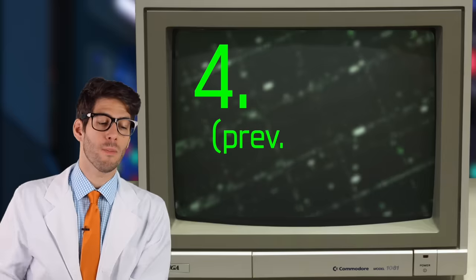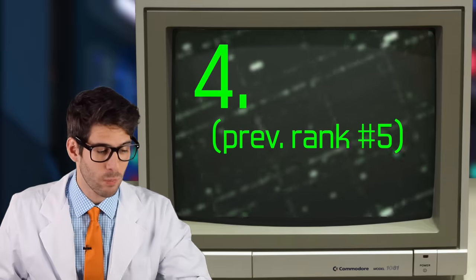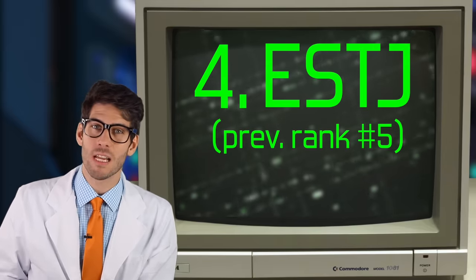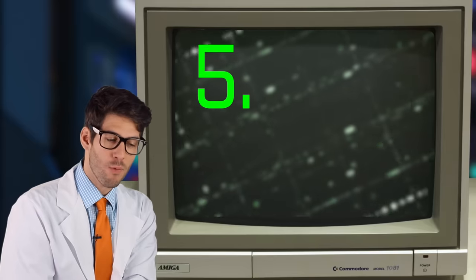The next type, which moved from the number five spot to the number four spot is the ESTJ with 8% of the population. What I'm noticing is that there is a clear shift from SF types being in the top positions last time to ST types being the more dominant ones this time around. And of course that makes sense given what we talked about in the first part of the video where we saw a big shift from the old statistics saying most people prefer feeling to the new ones saying that most people prefer thinking.